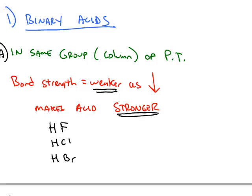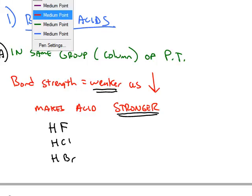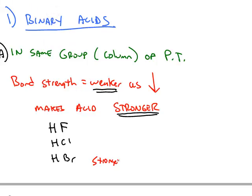So if you have hydrofluoric, hydrochloric, and hydrobromic, the strongest one would be the one at the bottom of the table. Hydrobromic acid is a strong acid. Hydrofluoric acid is not a strong acid. In fact, it's a weak acid.